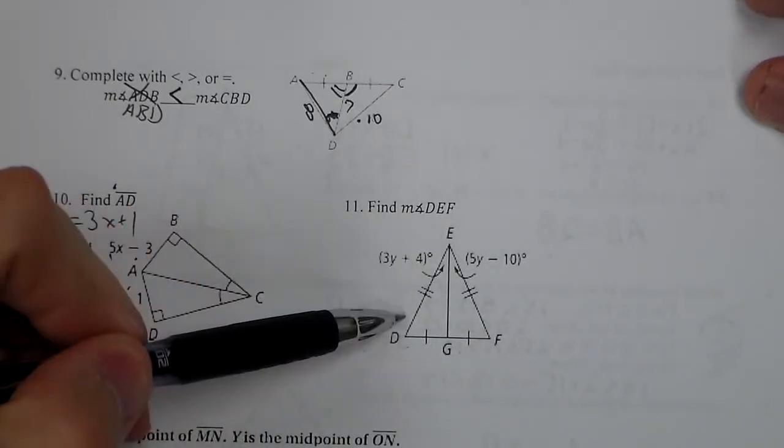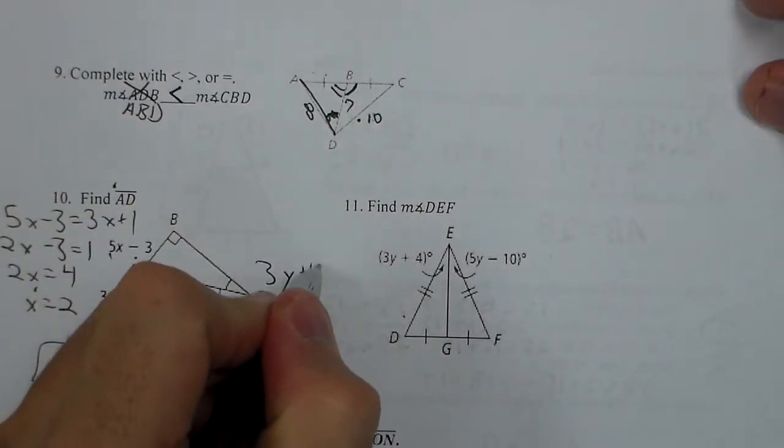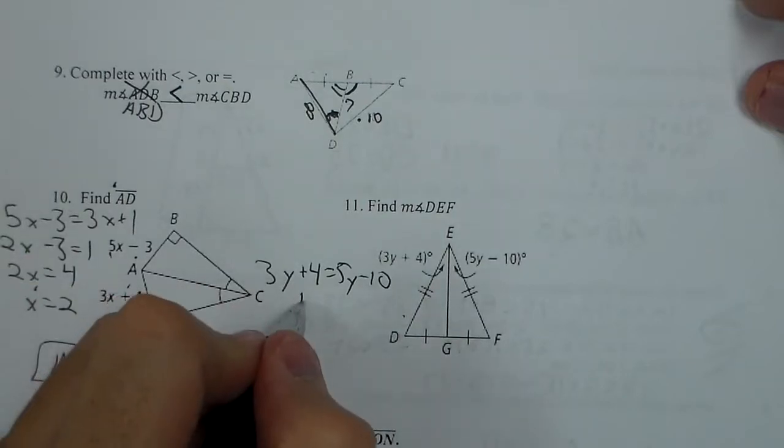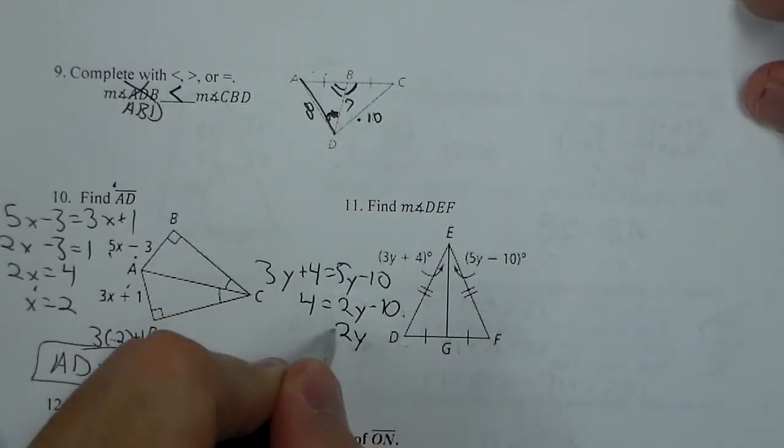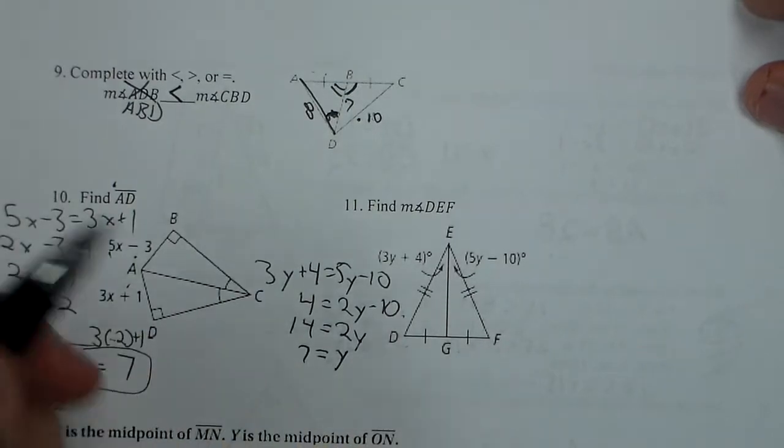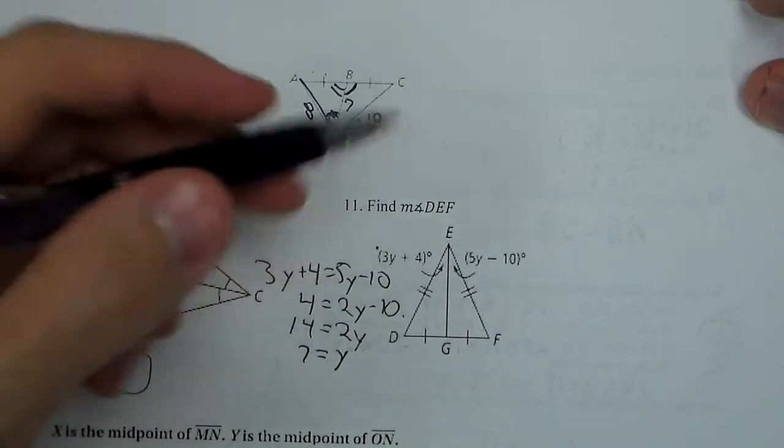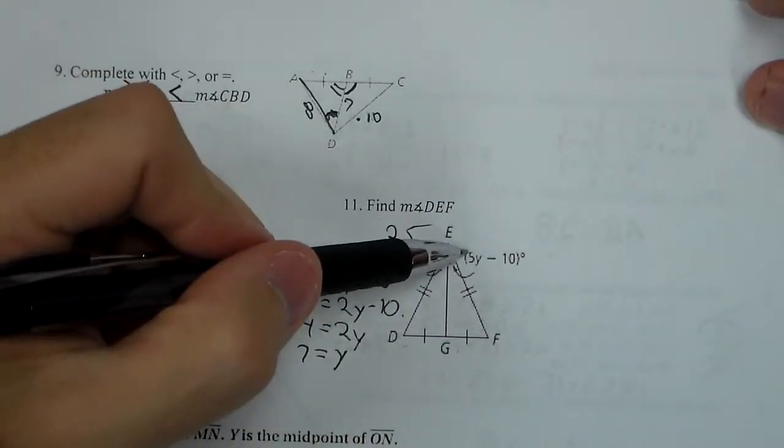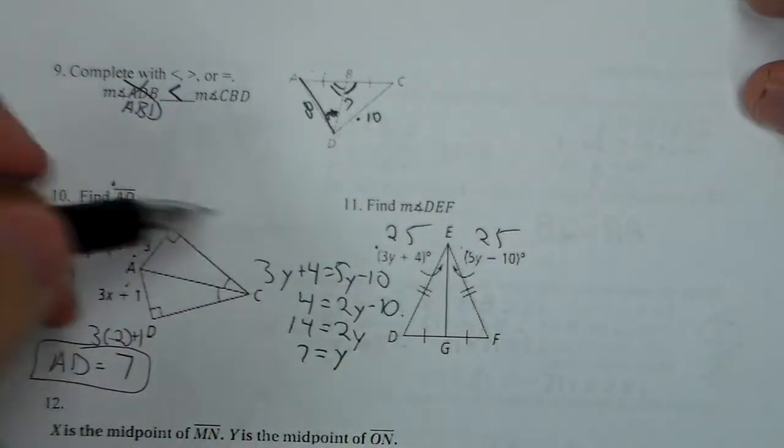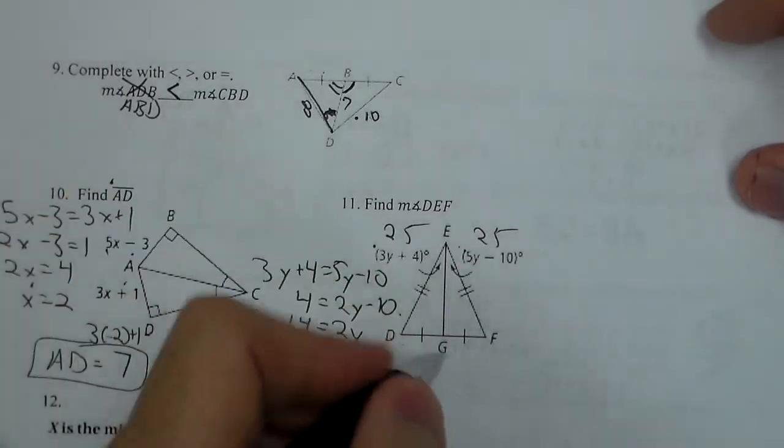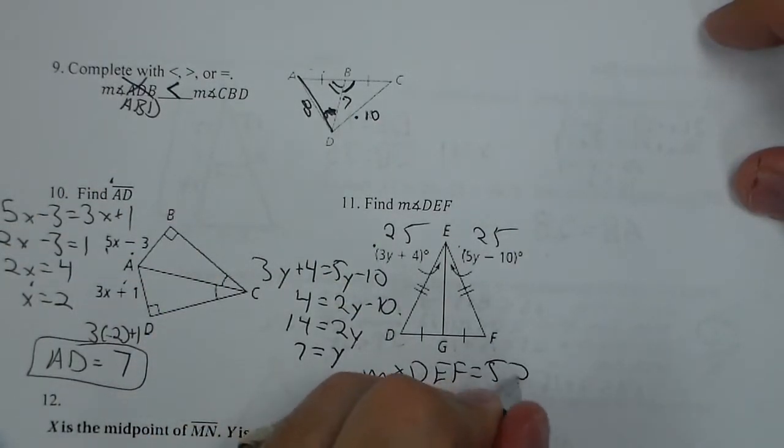For 11, we're looking for DEF, the whole angle. First, we've got to set those two parts equal. 3Y plus 4 equals 5Y minus 10. If I subtract 3Y from both sides, I then add over the 10. So I get Y equals 7. Now I'm going to plug that into each angle. 3 times 7 is 21 plus 4 is 25. 7 times 5 is 35 minus 10 is 25. They're both 25, which they should be. Now I total those together to get the measure of DEF to be 50 degrees.